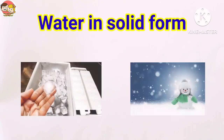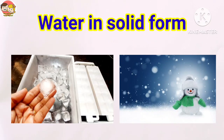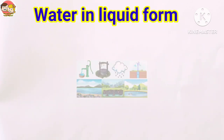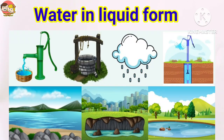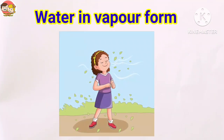On Earth, water is found in solid form as ice, snow, glaciers, etc. A large portion of water on Earth is present in liquid form — oceans, rain, seas, lakes, rivers, ponds and groundwater are the main sources of the liquid form of water. Water vapor is always present in the air around us; we cannot see it.